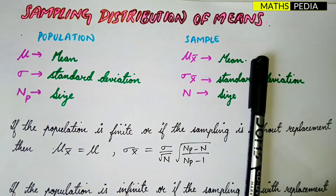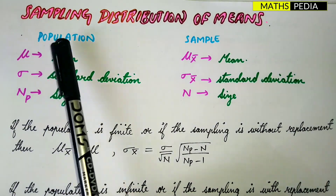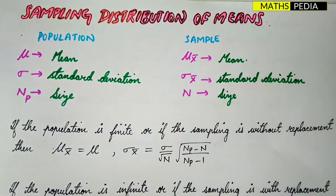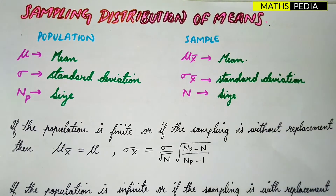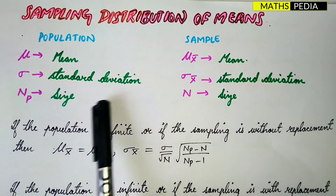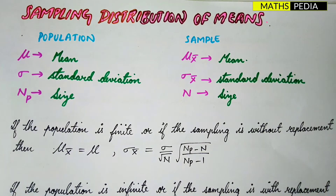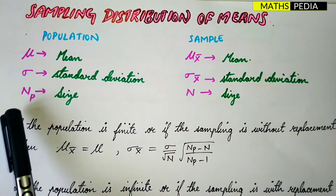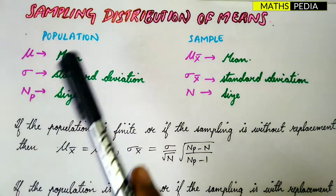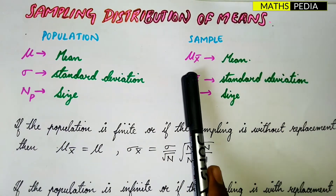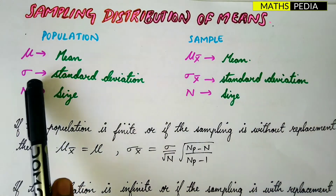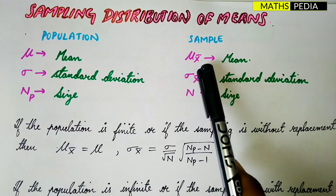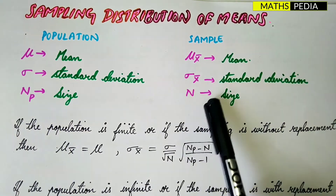First we need to understand what is population and what is sample. Population is a large set of data from which you take some small, finite data for research — that is the sample. For population, the statistical measures are: mean denoted by mu, standard deviation by sigma, and size by capital N. For sample, the mean of each sample is denoted by x-bar, standard deviation by sigma x-bar, and size by lowercase n.